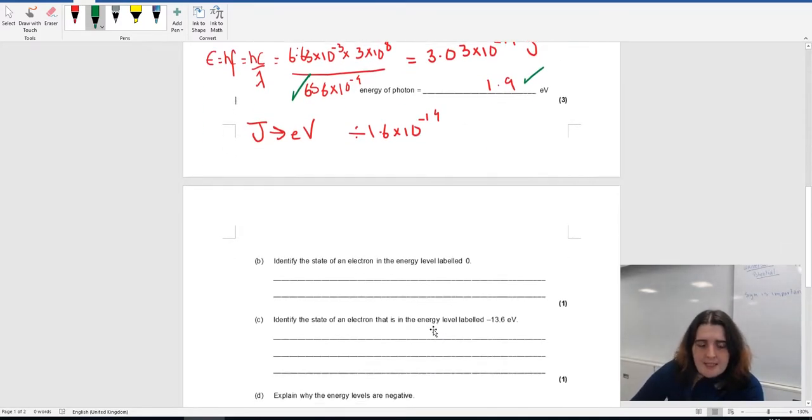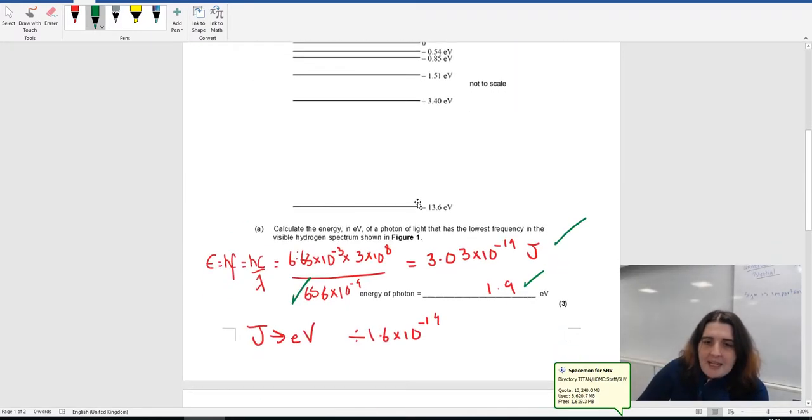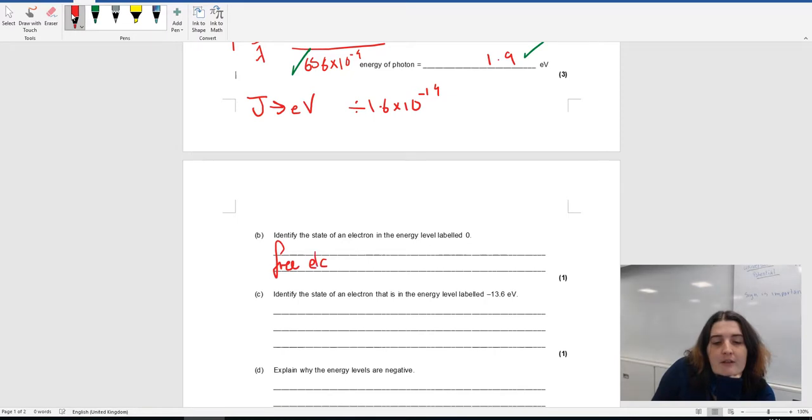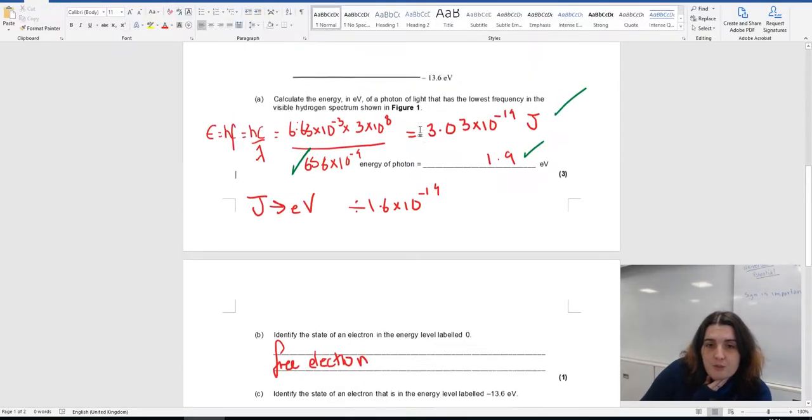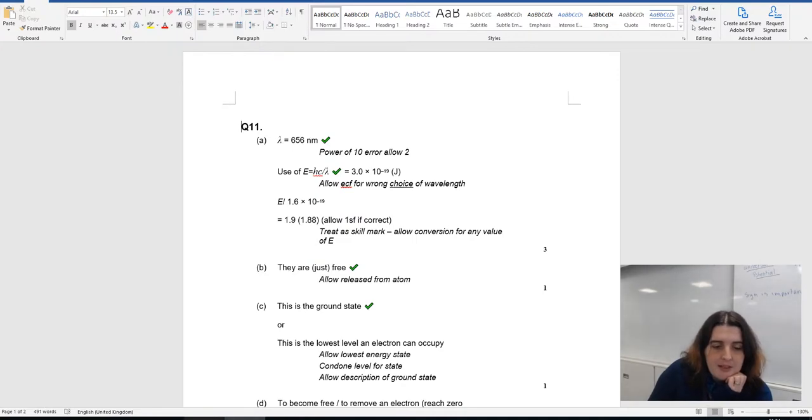So this one is identify the state of electron at zero. So if an electron is at zero potential, that means it is a liberated or a free electron. Identify the state of the electron when it's labeled at the bottom. So this is at the bottom, this is at the ground state. There are only one mark each. You can see here I've got a free or ground state.